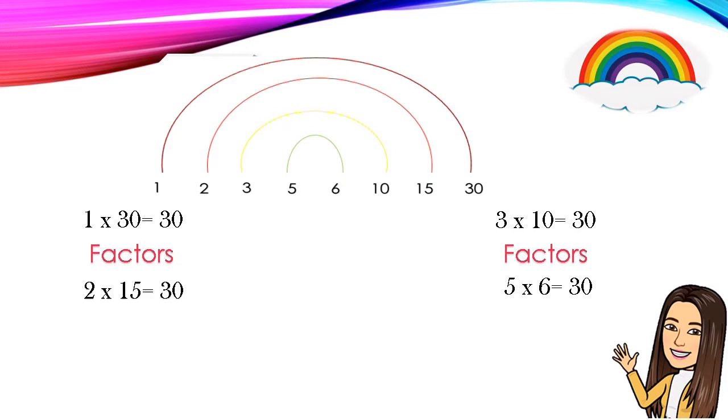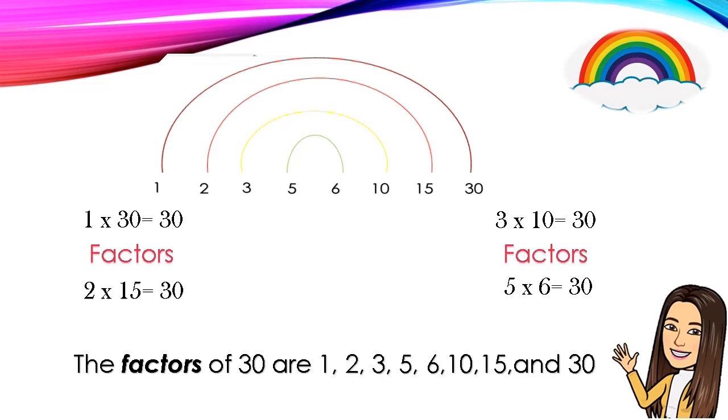These are called factors. The factors of 30 are 1, 2, 3, 5, 6, 10, 15, and 30.